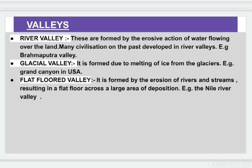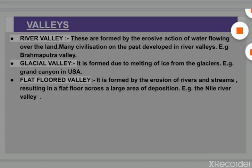Next is river valley. These are formed by the erosive action of water flowing over the land. Many civilizations of the past developed in river valleys. For example, Brahmaputra Valley.